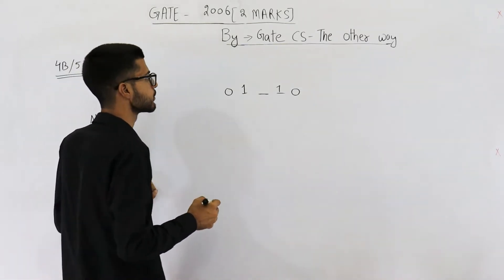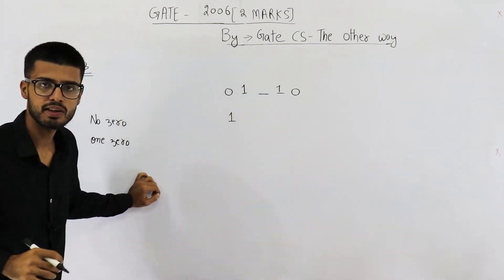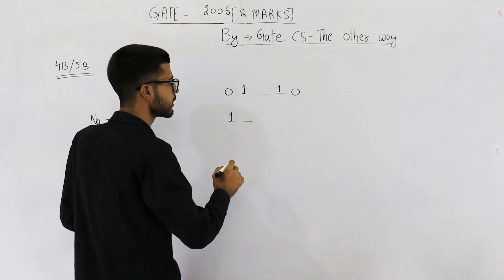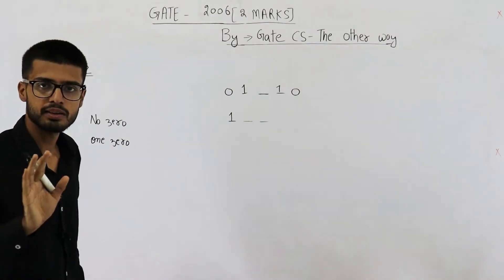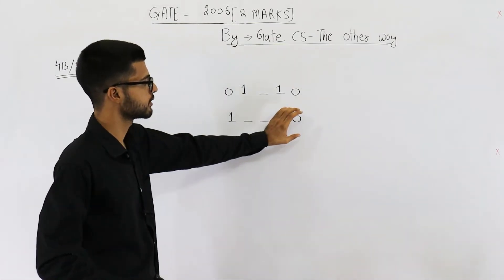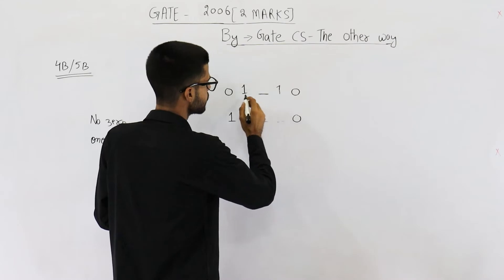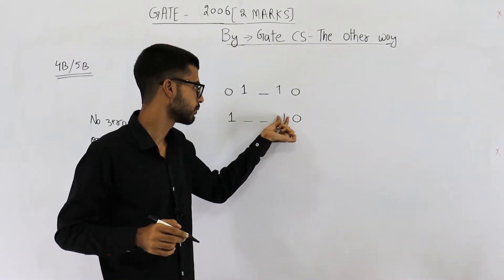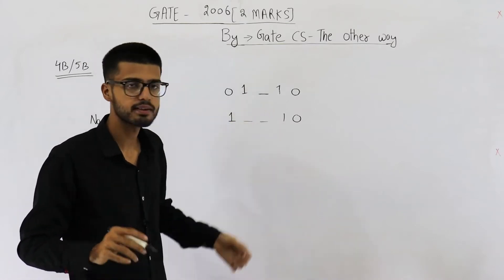What if you have no leading zeros? That means the codeword begins with one — it satisfies the condition of at most one leading zero. In that case, the bits in the middle can be anything. For the ending zeros, there can be either no zero or one zero. If the last bit is zero, the second-to-last bit has to be one, so it is fixed to one. In this case, you have two free bits, giving you two choices each.